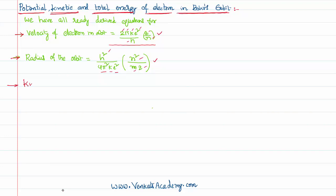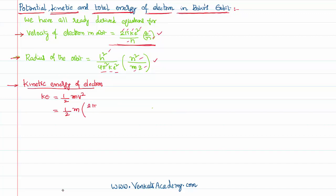Let us start with kinetic energy of an electron. We want to derive an equation for the kinetic energy of an electron in a given orbit. Whenever an electron is moving with a velocity in a given orbit, we know the standard formula: kinetic energy equals ½mv². We know the equation for velocity already, so let us substitute that value. Substituting v = 2πke²/h × z/n, and squaring it gives us ½m × 4π²k²e⁴/h² × z²/n².